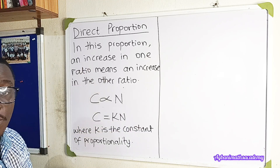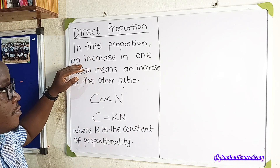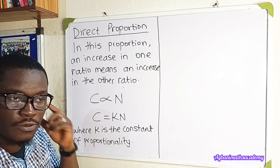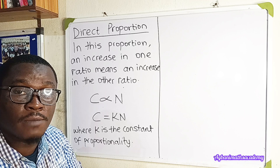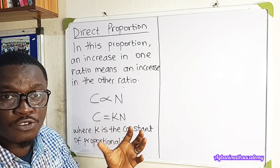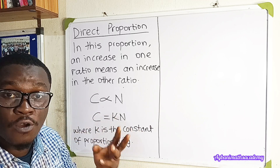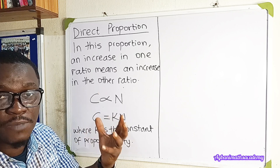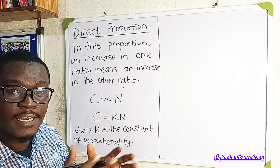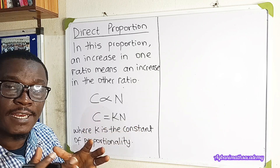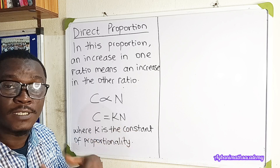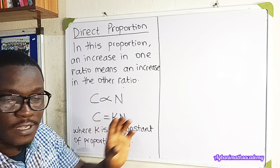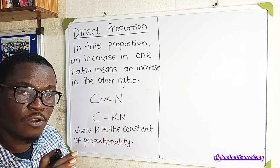Let's look at direct proportion. In direct proportion, an increase in one ratio means an increase in the other ratio. For example, if one boy can transfer 50 kilograms of cement, two boys with the same strength can transfer 100 kilograms, and five boys will transfer 250 kilograms. So when one value increases, the other value also increases — that kind of relationship is called a direct proportion.